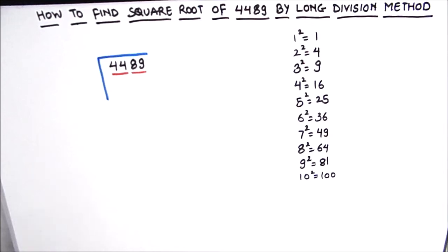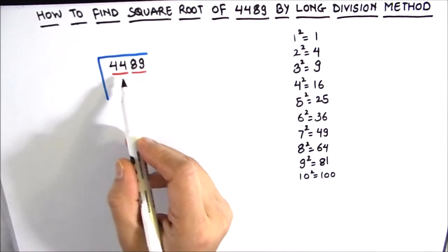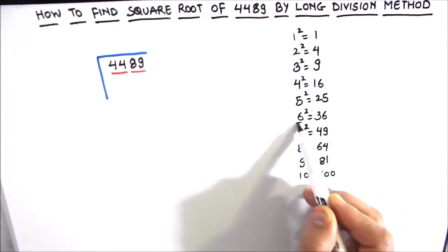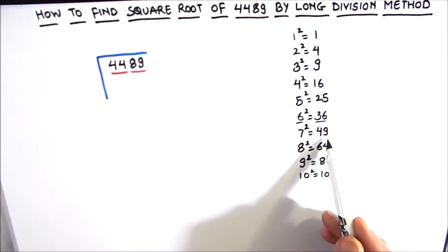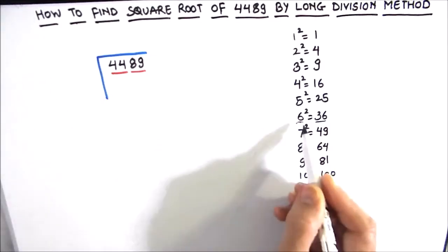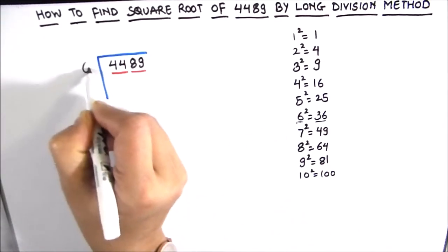Now comes the next step. The next step is to find the number whose square is equal to 44 or just less than 44. Here we see that 6 square is 36, so 6 is the number whose square is just less than 44 because 7 square will be more than 44. This square number 6 will be our divisor as well as our quotient.